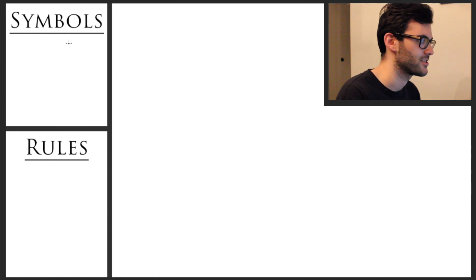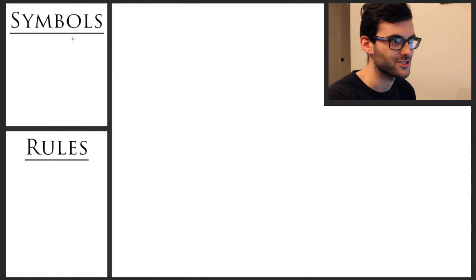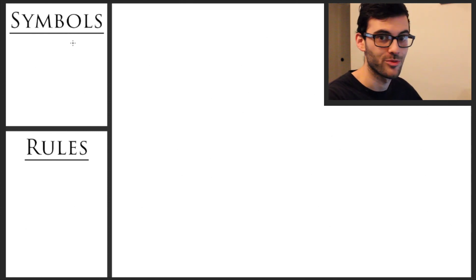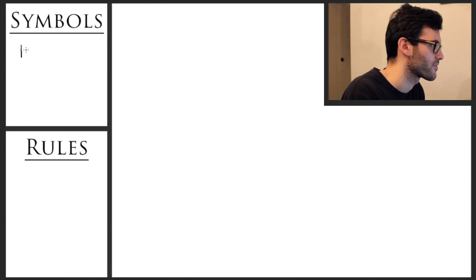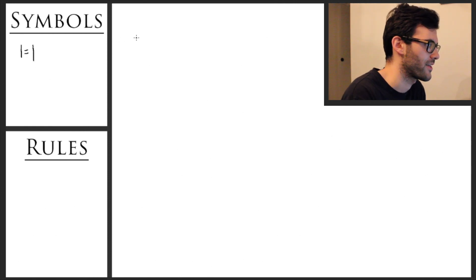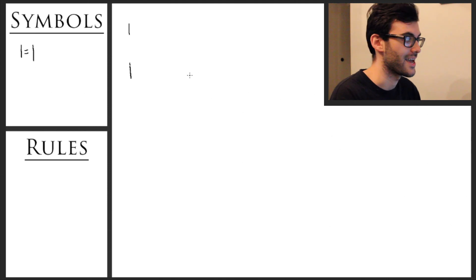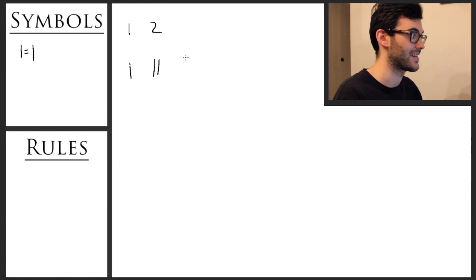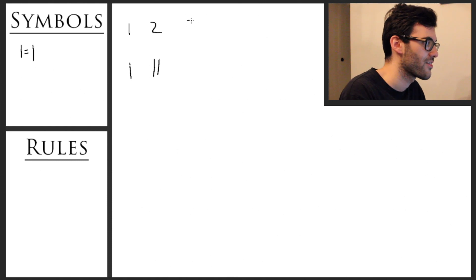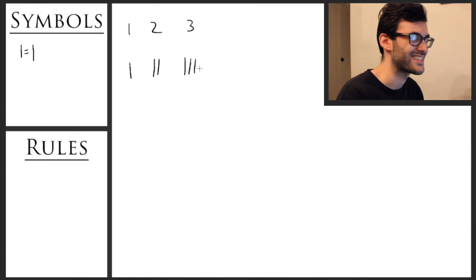So we'll start off with basically just the first numbers. Roman numerals actually don't have a numeral or a symbol for zero, so we're going to skip over that altogether. We're going to start with the symbol for one, which is an I. Two is written as two I's, three is written as three I's, and that's kind of where that pattern stops.